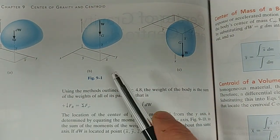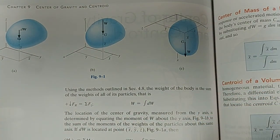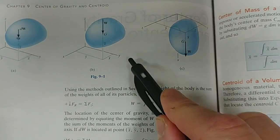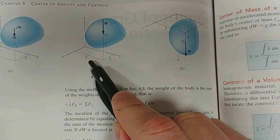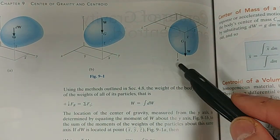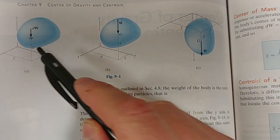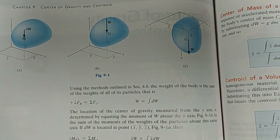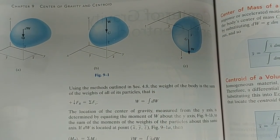Just a quick note: the center of gravity, center of mass, or centroid — the location of that position is given by X bar, Y bar, and also Z bar. The basic idea is something called the principle of moments, which you've seen before.